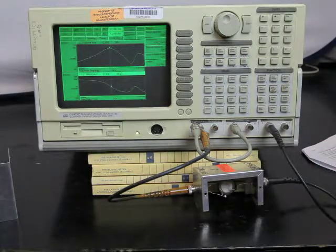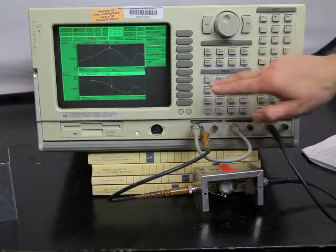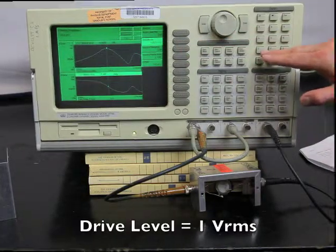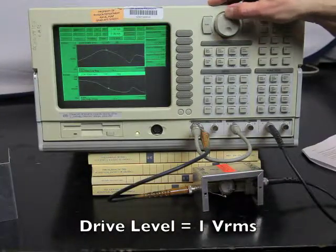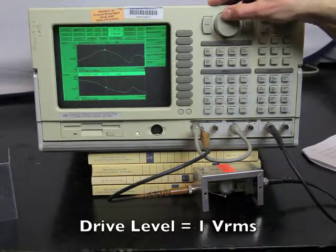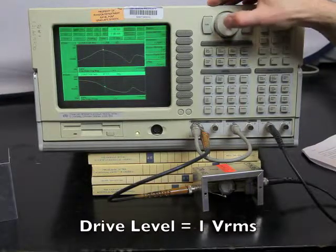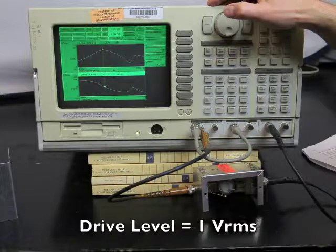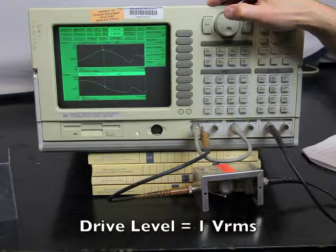Now let's try a drive level of 1 volt. Now you can see a much bigger shift in the peak. It's at 2.0588 kilohertz.